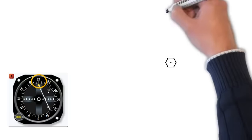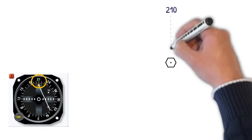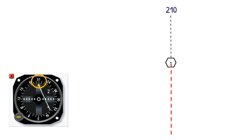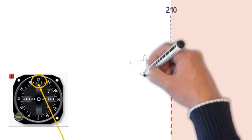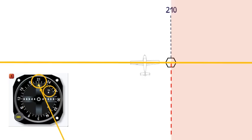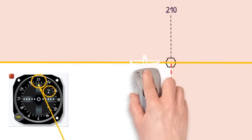Now we're using image number one from the computer testing supplement. The CDI shows that somebody has selected 210 in the OBS — that's not our course or heading, that's the radial we want extending from the VOR. We draw a radial extending from the VOR at 210, plus an imaginary extension line, to determine whether we're right or left of course. The CDI indicates the course is to the right of us, so assuming we're headed 210, we are left of course and cannot be in the red area. There's also a TO flag on the CDI, so we draw our perpendicular line to 210, confirming we can't be in the area where the radial extends from the VOR.